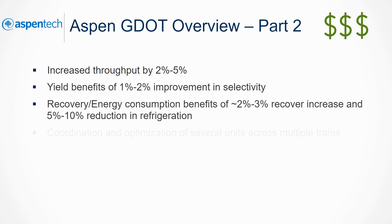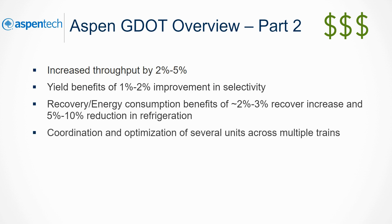More generally, GDOT can coordinate and optimize several units across multiple ethylene trains and improve overall value chain margin. All told, implementing GDOT can lead to an additional $6 to $10 per metric ton.